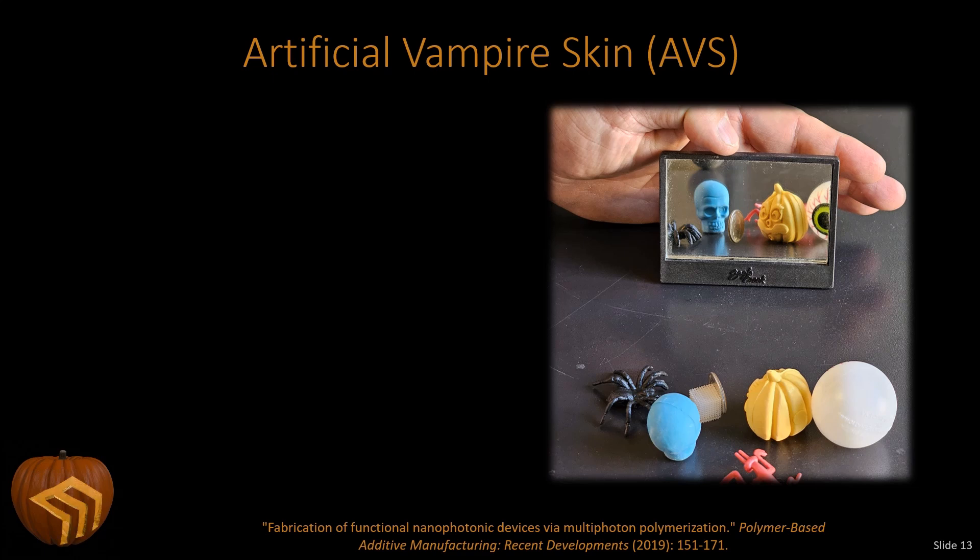I mentioned at the beginning of the video that it is possible to mimic vampire skin experimentally. So here is the results of that experiment. And we're calling this our artificial vampire skin, or our AVS for short. So what I've done is I've arranged some Halloween items here, along with our AVS sample. And if we look at the reflection in the mirror, we can see that this AVS sample is not there. And we now understand that light that gets reflected from the AVS becomes longitudinally polarized, which does not produce a reflection in the mirror. But everything else reflects transversely polarized waves, which do reflect from the mirror.